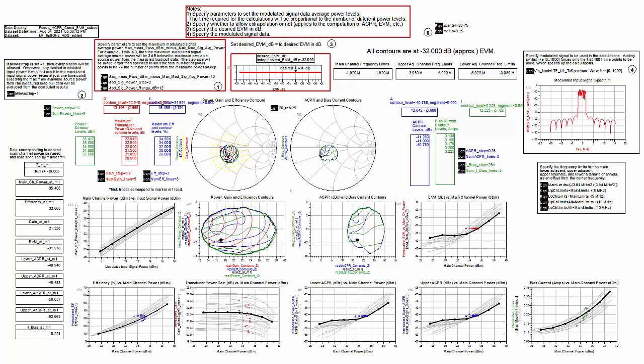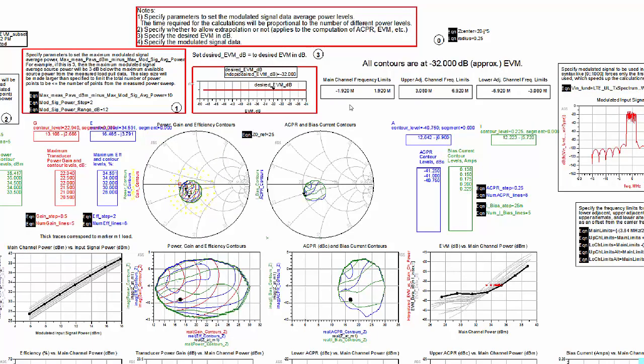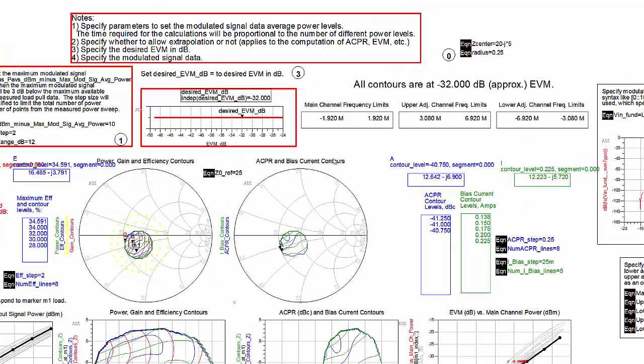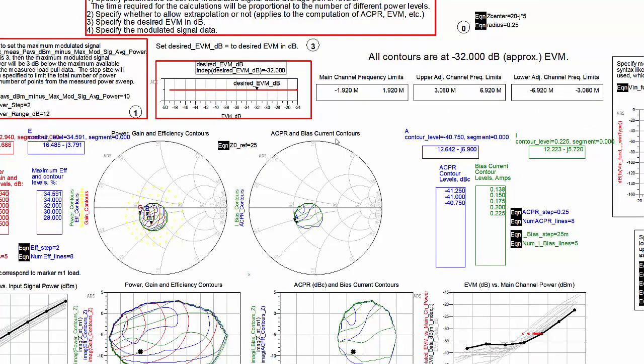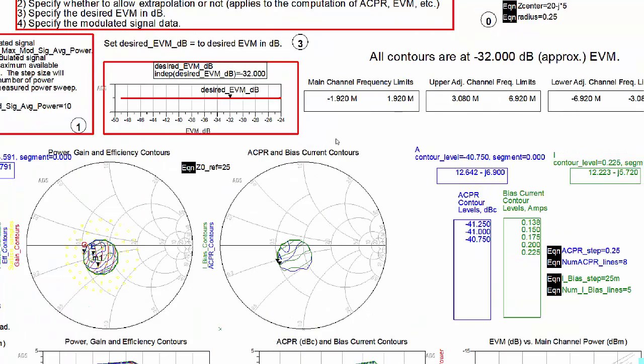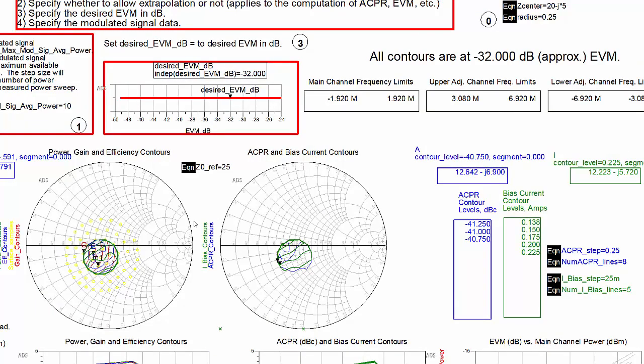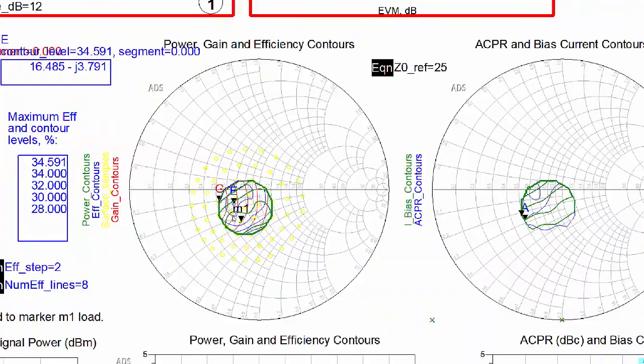Depending on the measured load pool data file and your EVM objectives, it may be that only a small part of the Smith chart near the optimum is all you want to look at. In this data display, you specify a circular region of the Smith chart, and only loads within the circle are used in the calculations.